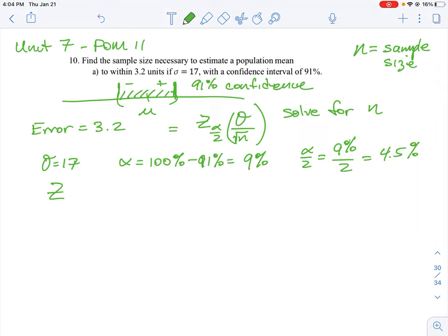We just need to find one of our z scores. The z alpha divided by 2 score we calculate using our calculator with the inverse norm function. We plug in the percentage we're trying to find the z score for, which is 4.5%. This is the one at the lower end, and we get a value of negative 1.69.